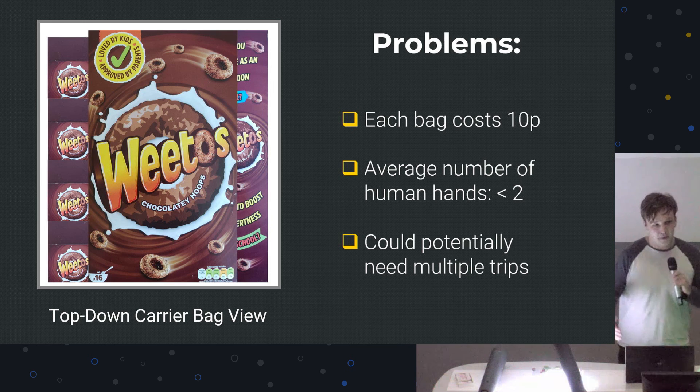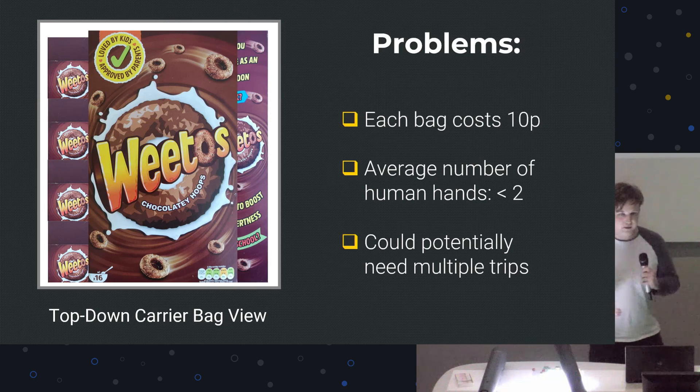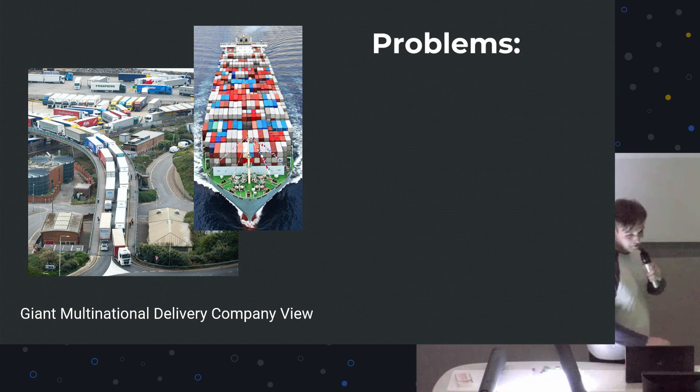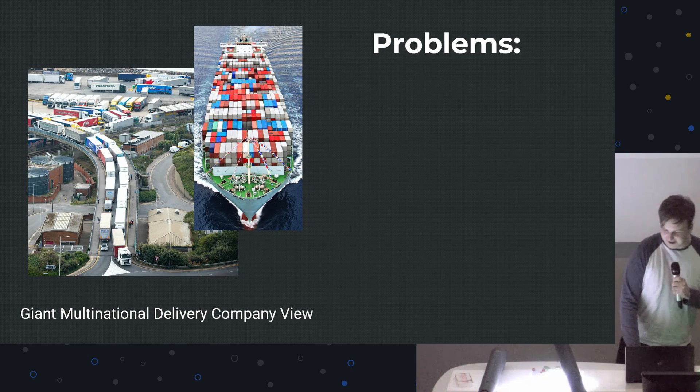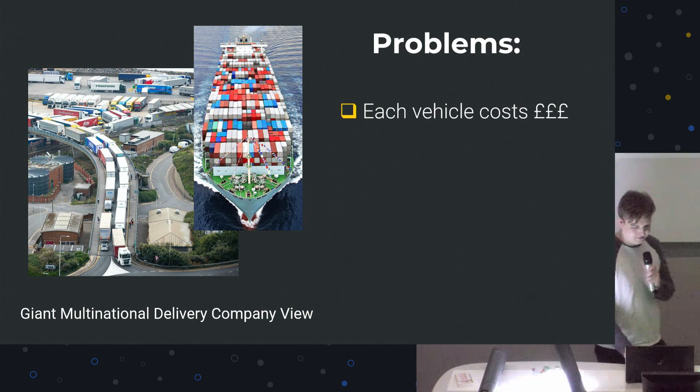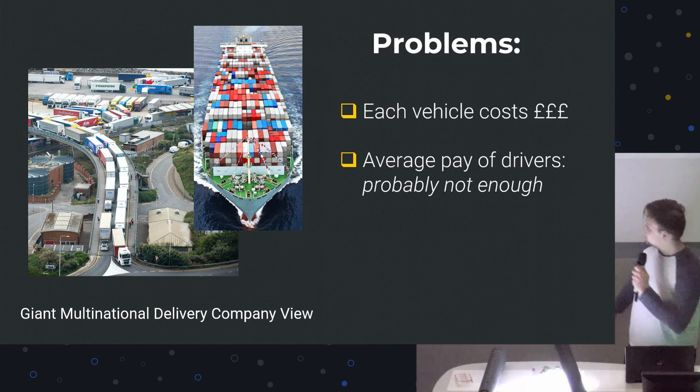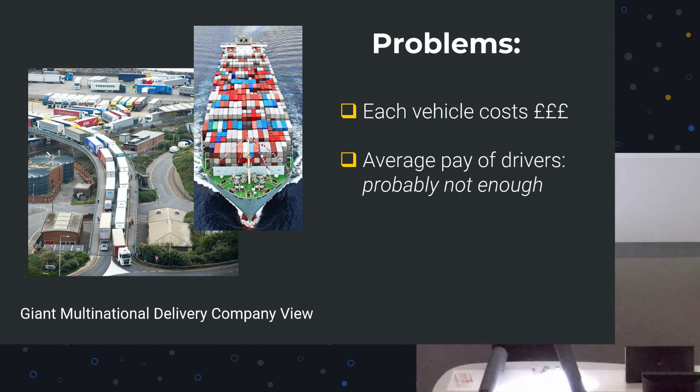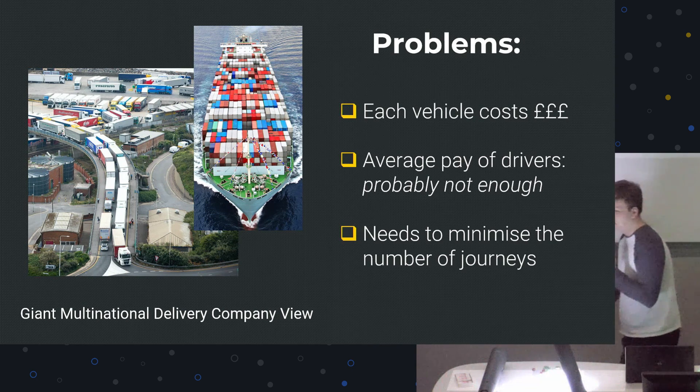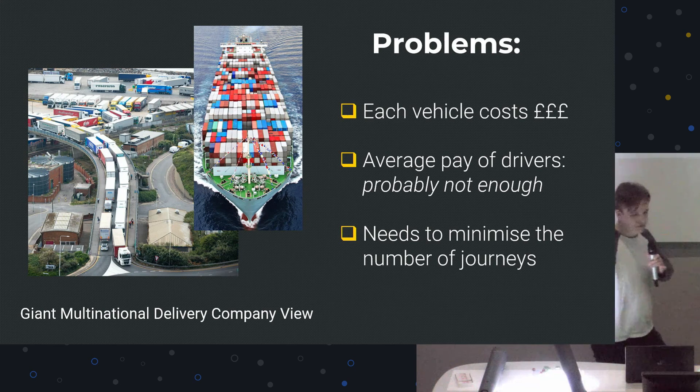This is obviously a problem that I have and that you have. And this is not just a problem for people. It's also a problem for giant multinational delivery companies. First problem is that each vehicle costs a lot of money. I put some pounds, some people like dollars. I mean, to be fair, at this rate, it's probably worth more in dollars. The average pay of drivers is probably not enough, but they actually have to pay their drivers, which costs money. And also, they need to minimize the number of journeys that they want to take. You know, all the fuel costs. And also, you want to sell as many Weetos as possible.